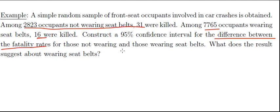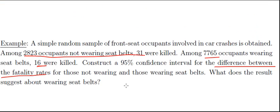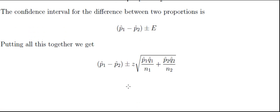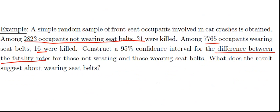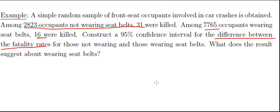Okay, so what I want to do is I want to summarize all this information and I want to use this formula right here. So I need the sample proportion from group 1. We'll call that the occupants that were not wearing the seatbelts. And the sample proportion from group 2. That's the occupants that were wearing a seatbelt.